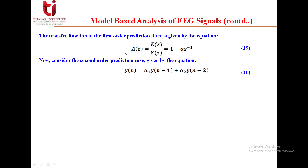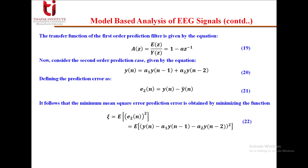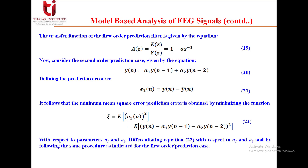Now let us consider the second-order prediction case. The equation is given as y(n) = a₁·y(n-1) + a₂·y(n-2). The prediction error e₂(n) = y(n) - ŷ(n), and the minimum mean square error is computed as E[(y(n) - a₁·y(n-1) - a₂·y(n-2))²]. In this case we have two parameters, a₁ and a₂, so we differentiate the equation with respect to both a₁ and a₂, following the same procedure as in the first-order case.